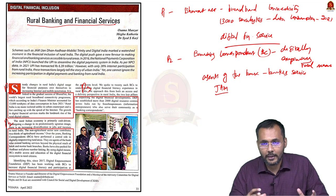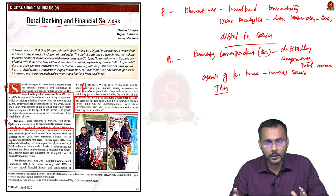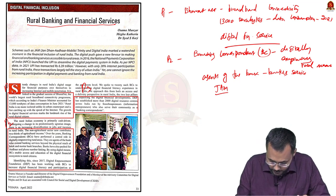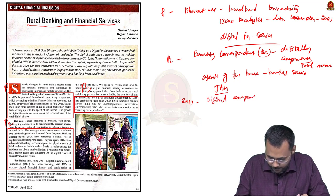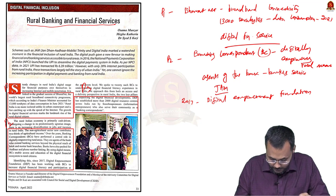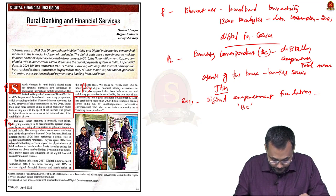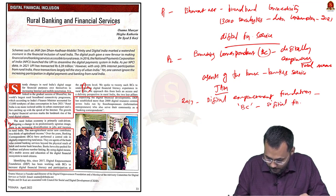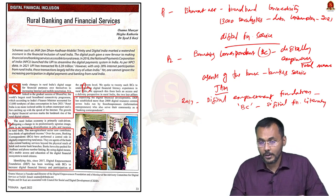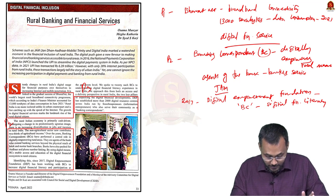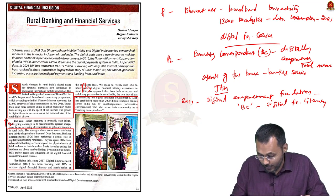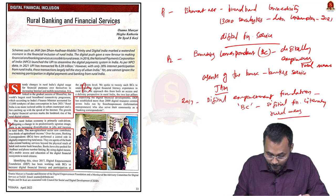This is possible because of JAM Trinity. In 2017, the Digital Empowerment Foundation was established in collaboration with banking correspondents to increase digital financial literacy, especially in rural areas. The Digital Empowerment Foundation has created around 2,000 digital resource centers that are run by information entrepreneurs — local people trained to act as banking correspondents.